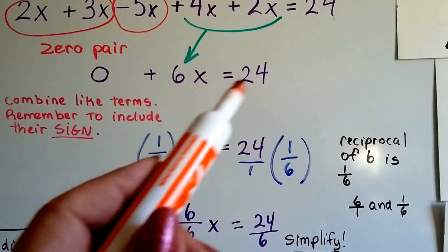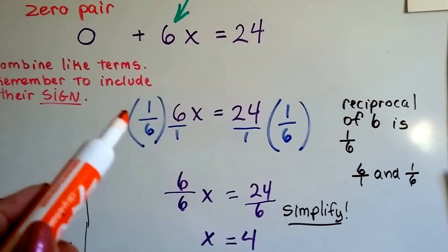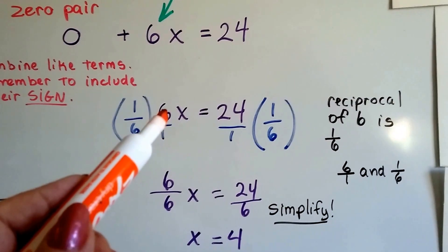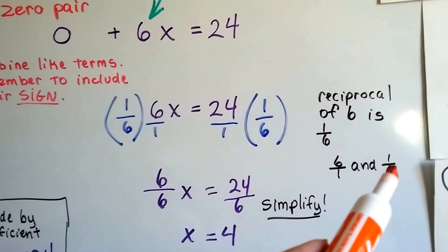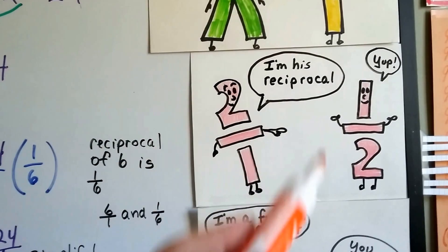So now we've got 6x equals 24, and we can multiply both sides of this equation by the reciprocal of 6. So, because 6 can be written as 6 over 1, its reciprocal is 1/6. You just flip around the numerator and denominator.